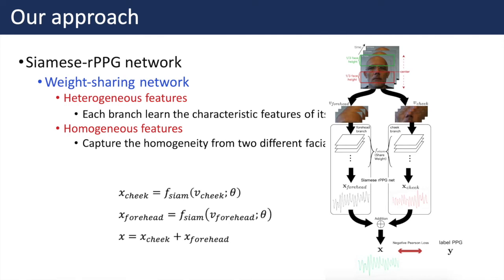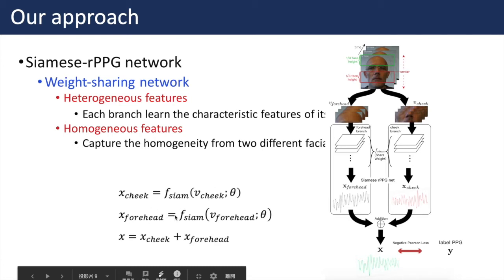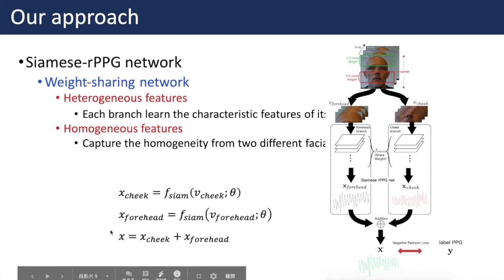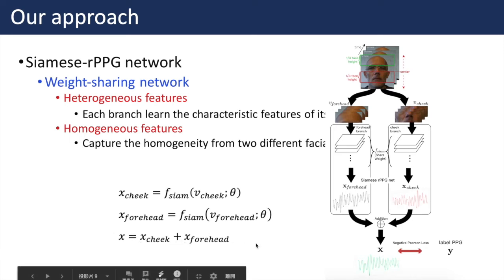The mathematical formulation of the proposed Siamese RPPG network is expressed as follows. The theta represents the weight of the network, and x is our final RPPG result, which is the sum of the two individual RPPG signals from the two branches.